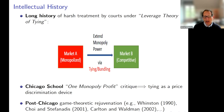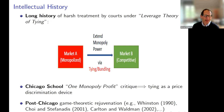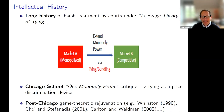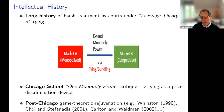The basic idea in the leverage theory — the concern — was that a firm with monopoly power in one market, say A, might be able to leverage or extend that market power through tying and bundling to another market B, which is competitive or oligopolistic, and thereby monopolize that market. The intellectual history in the U.S. involved very harsh treatment by courts for many years, until the Chicago school came along in the 1950s and 60s.